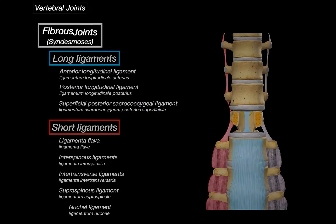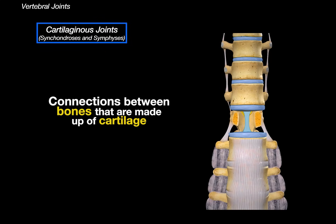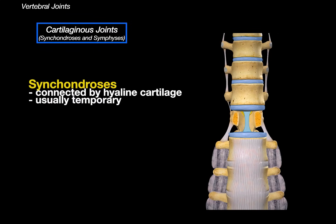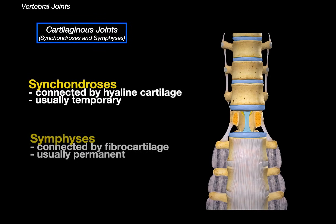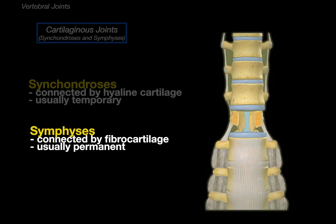Now let's do the cartilaginous joints. Cartilaginous joints are connections between bones made up of cartilage, divided into two types: synchondrosis, connected by hyaline cartilage and usually temporary like those found during growth; and symphysis, connected by fibrocartilage and permanent, providing strength with a little movement. In the adult vertebral column, all cartilaginous joints are symphysis — there are no synchondroses between the vertebral bodies after development is complete.